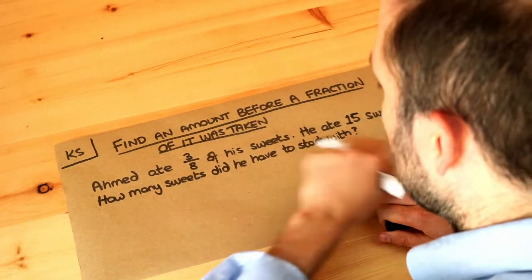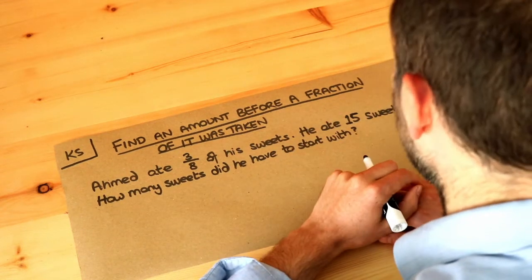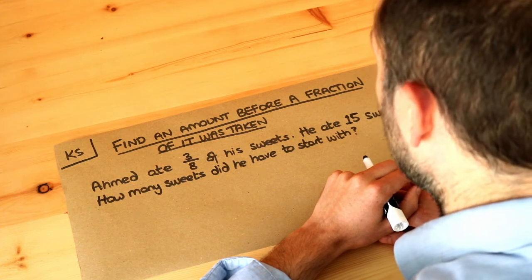So hopefully this example will make this clear. Ahmed ate three eighths of his sweets. He ate fifteen sweets. How many sweets did he have to start with?